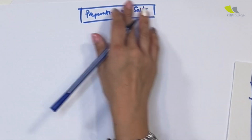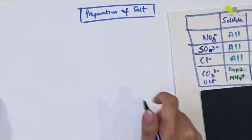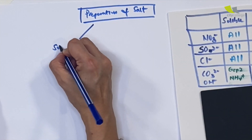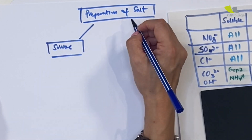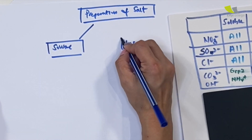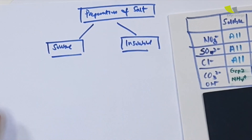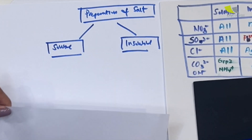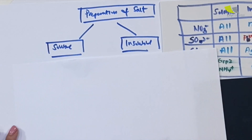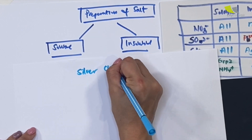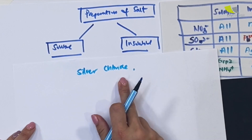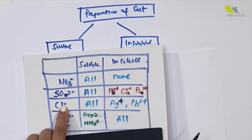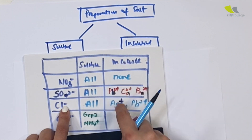Why is the solubility salt table so important? If you have a soluble salt, you have your own method of preparation. If you are insoluble, you have your own method of preparation. Let me give you an example. Let's say silver chloride — it's a chloride, use the table. Ag is silver, it's insoluble. So this falls under the insoluble category.